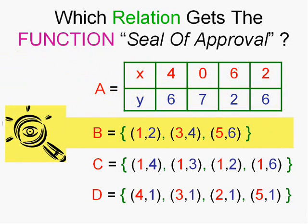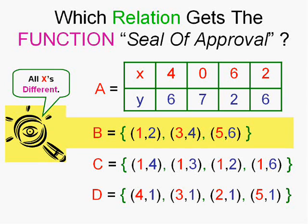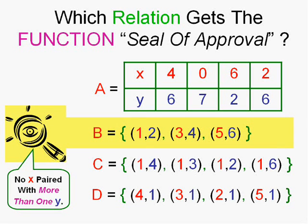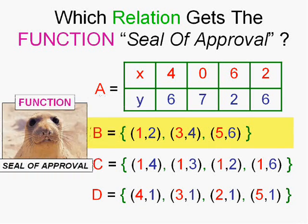Now, let's look at relation B. All the x's are different. That's probably the easiest way to do it, isn't it? No x is paired with more than one y. So, once again, we have a function here, a relation that is a special type of relation, a function.